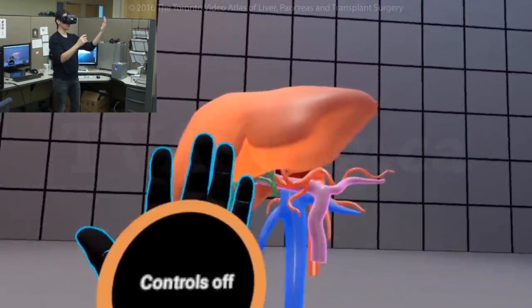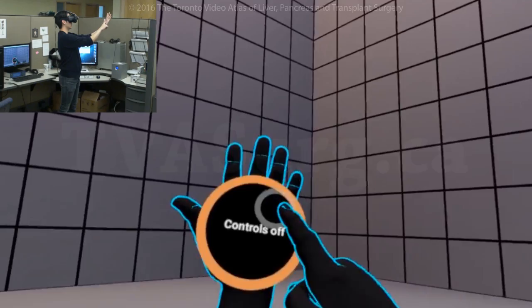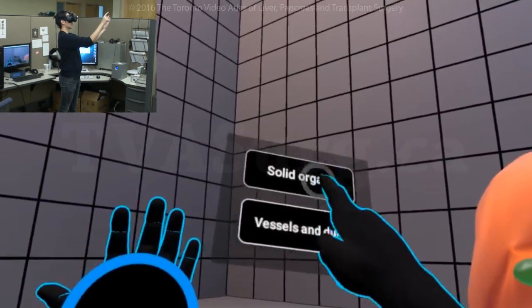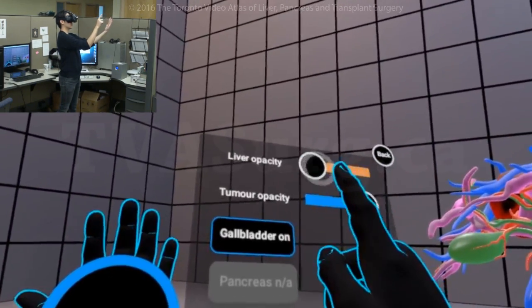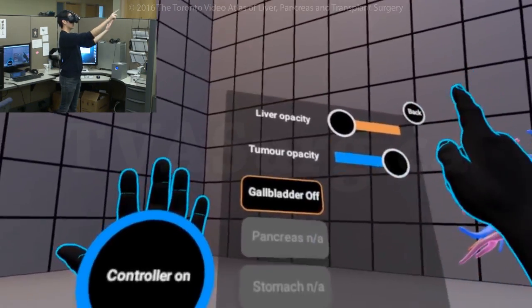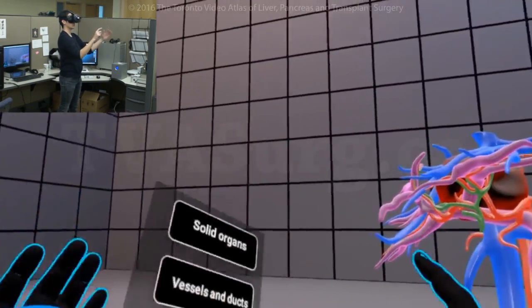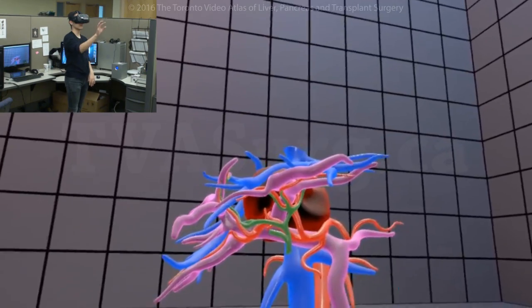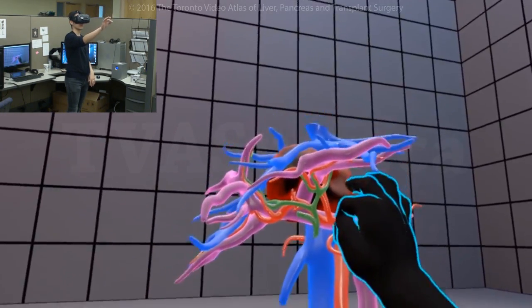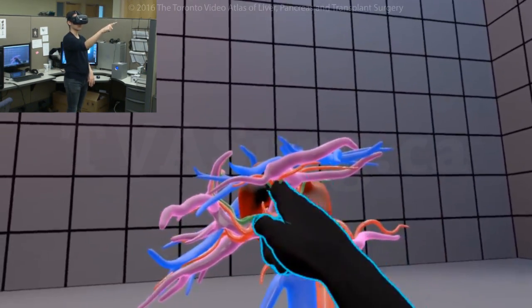And then we can use our mini control console to turn off certain pieces of anatomy. So if we turn off the liver and the gallbladder here, you can see that there's actually a very big tumor nested right inside the liver vessels, you can see right here.